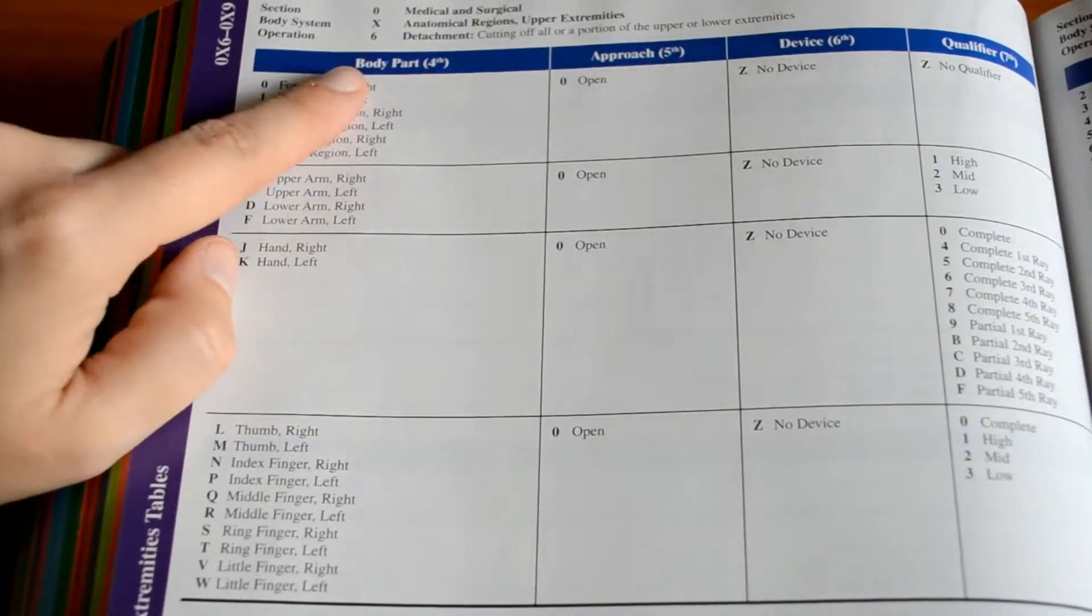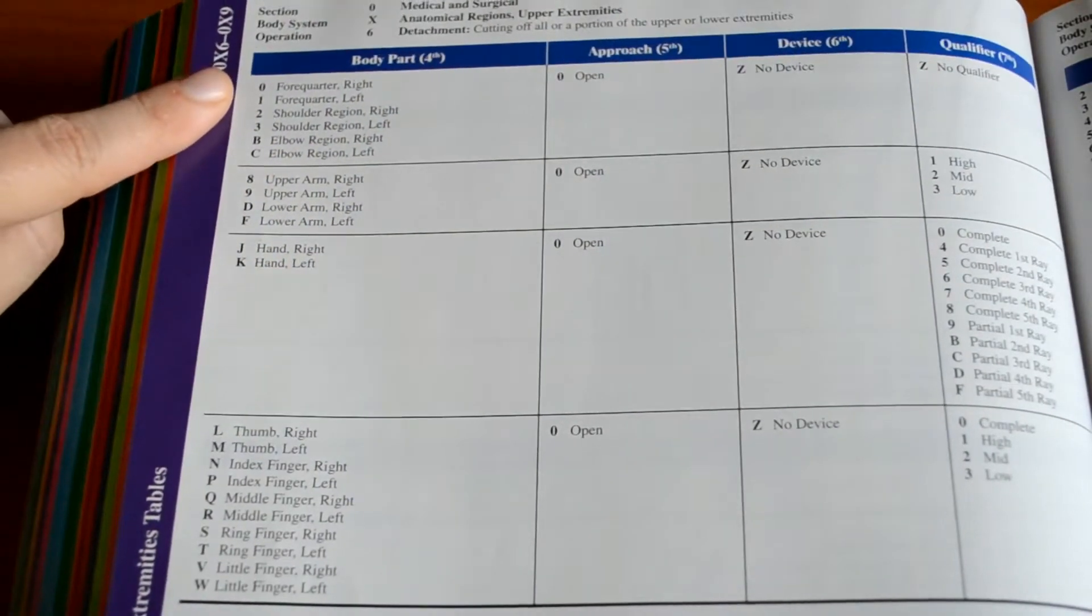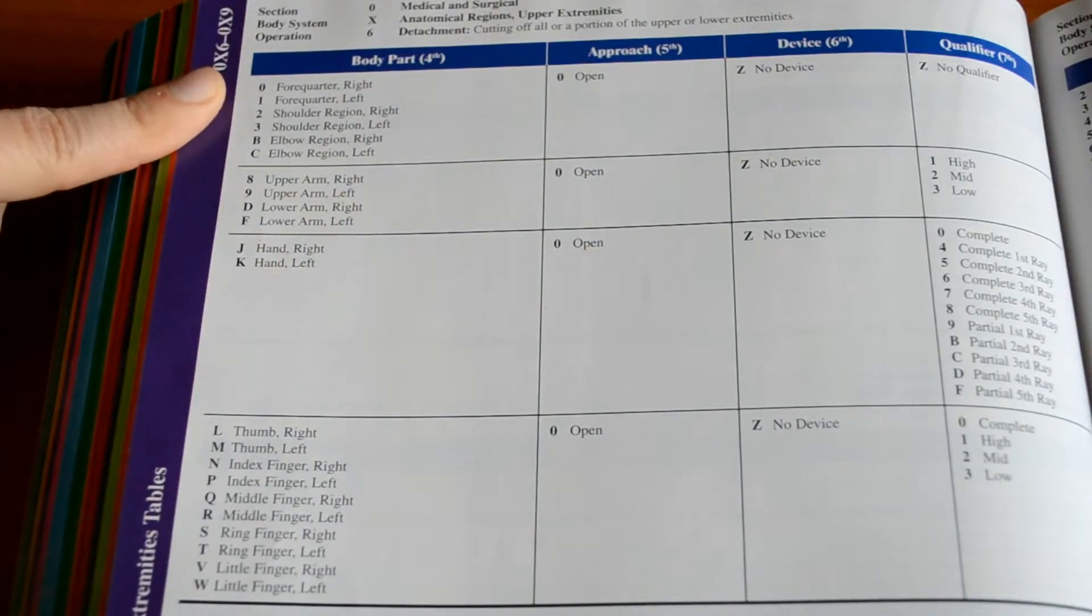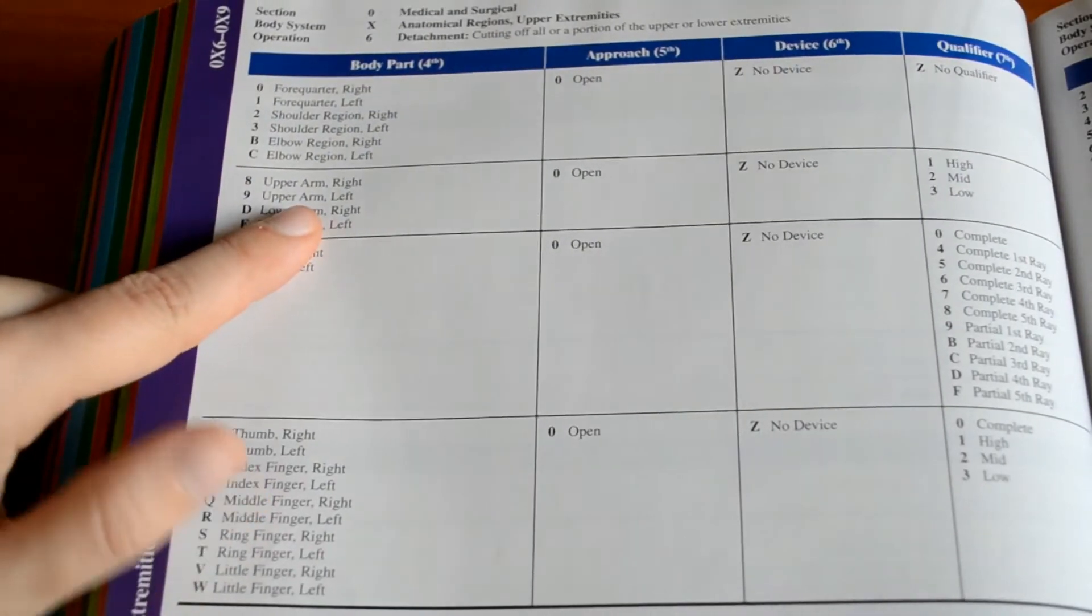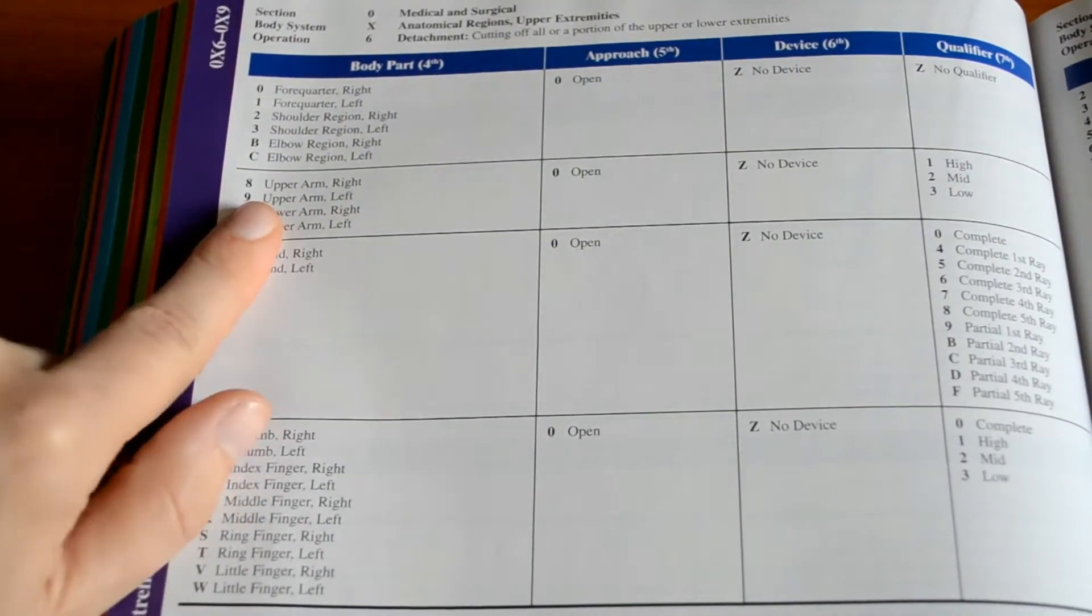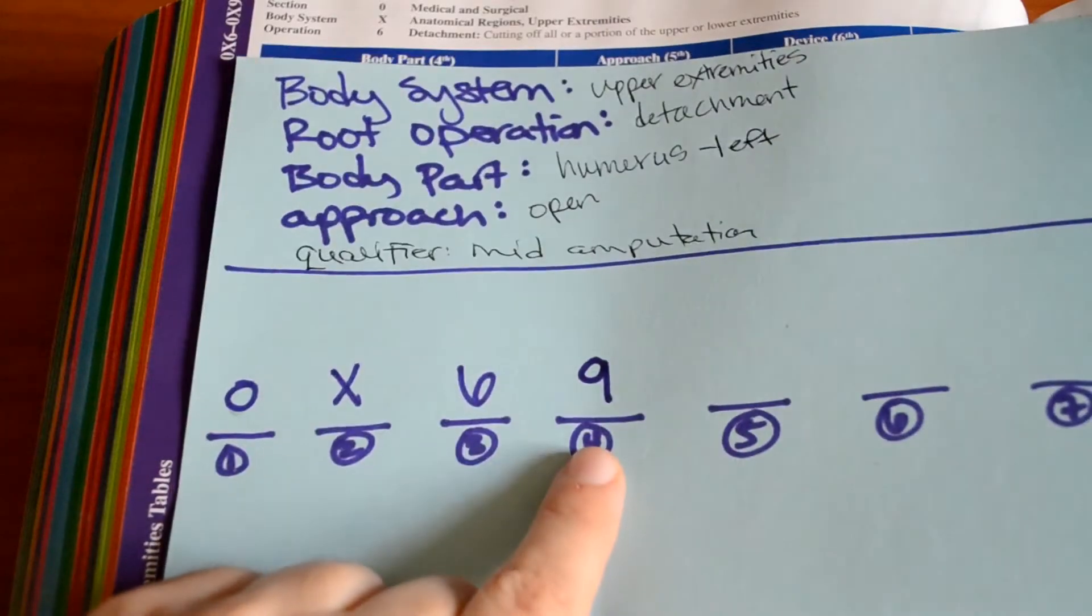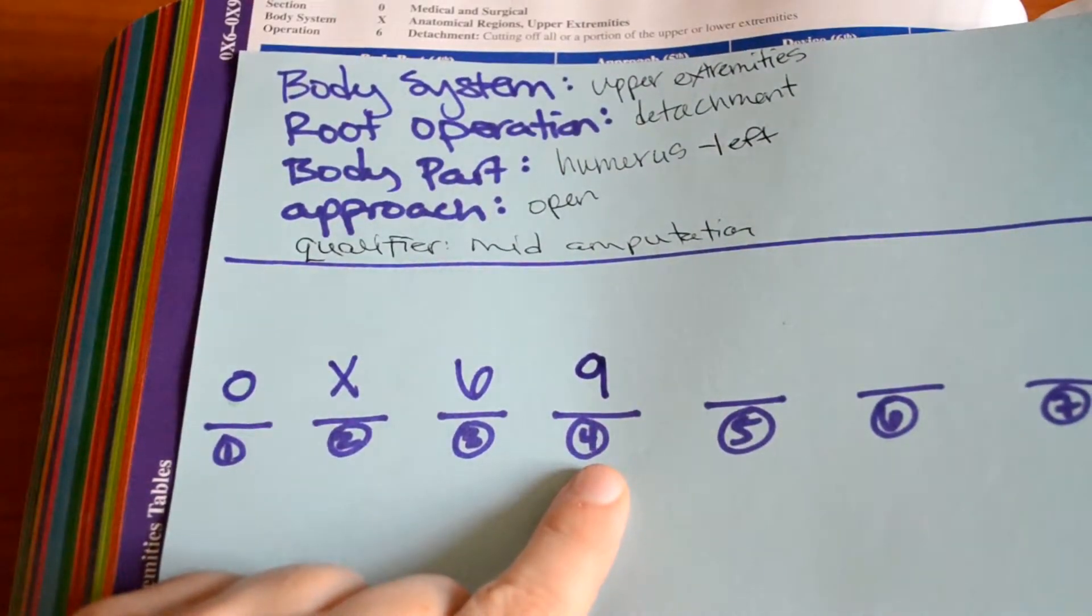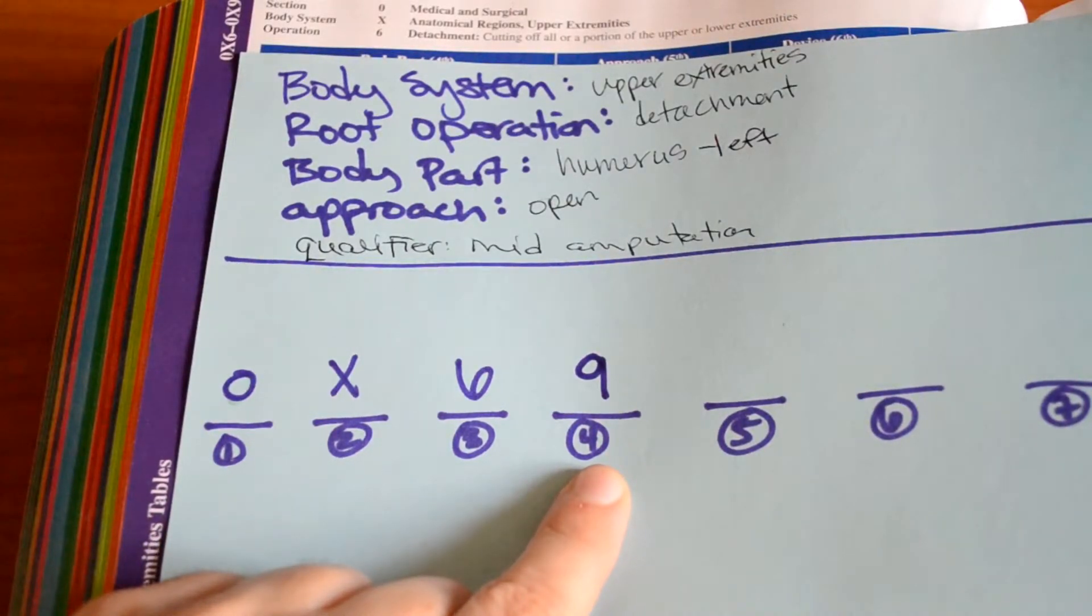So then we want to go to our body part column, which is our fourth character placement. And we want to look for upper arm or humerus on the left side. Upper arm, left. So that is a 9. So they do not go into specific detail about the humerus, but that is okay. So our fourth character placement, our body part, that's a 9 for the left upper arm, since that is where the humerus is located.